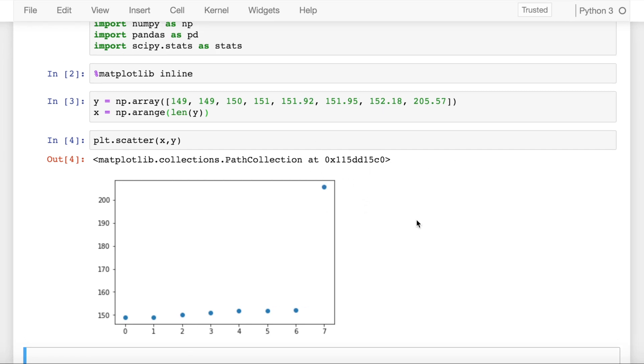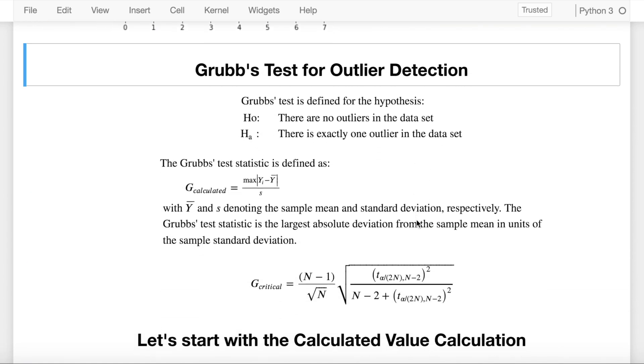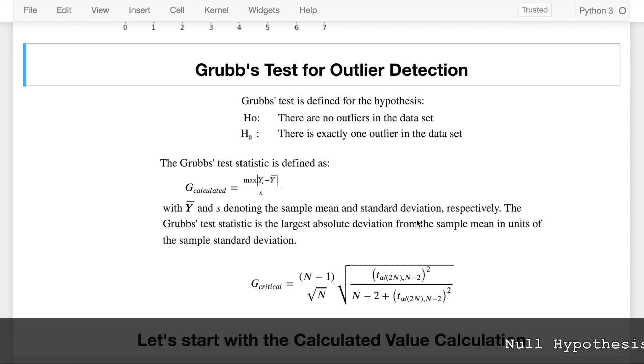How is the Grubbs test defined? A bit of mathematics is what I'll introduce in the next section. As for any test of hypothesis, Grubbs test also has two hypotheses that are famously known as null hypothesis and alternate hypothesis. The null hypothesis for Grubbs test is that there are no outliers in the dataset. The alternate hypothesis is that there is exactly one outlier in my dataset.